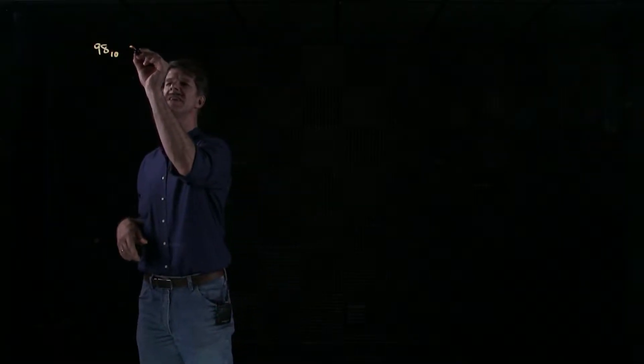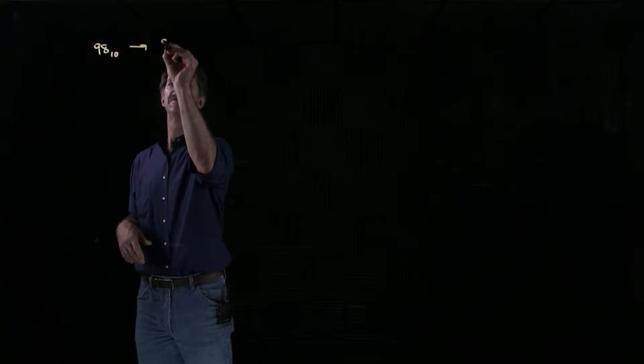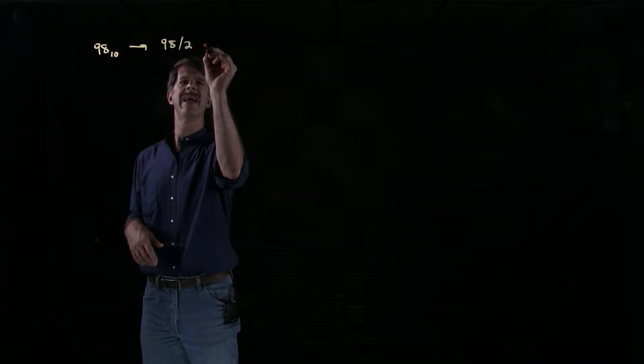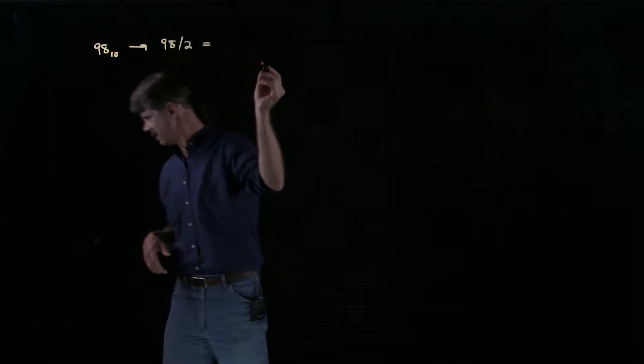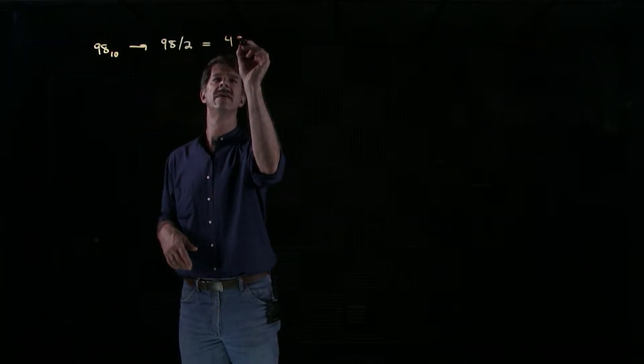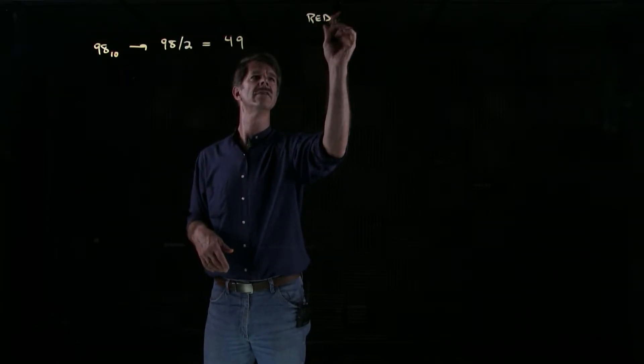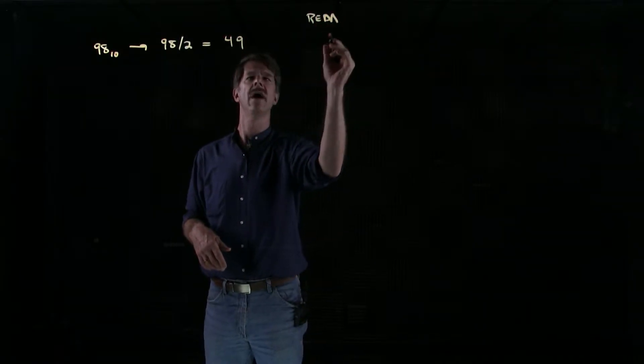We're going to follow the same procedure we did on the decimal to decimal conversion. We'll take 98, divide it by 2, which gives us 49, and I'll just write a column here.